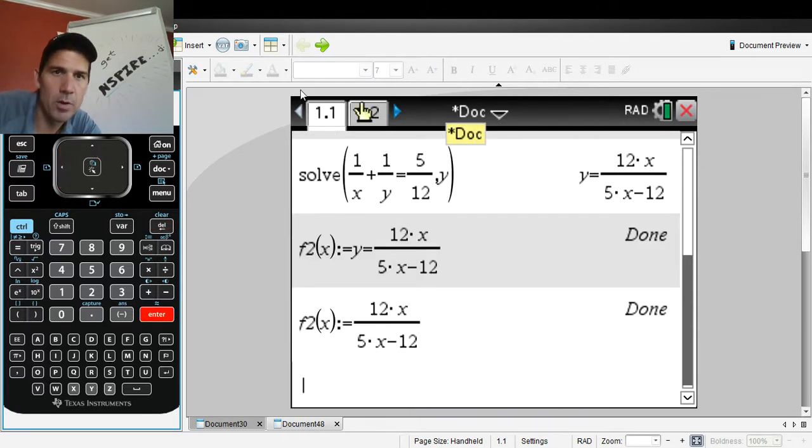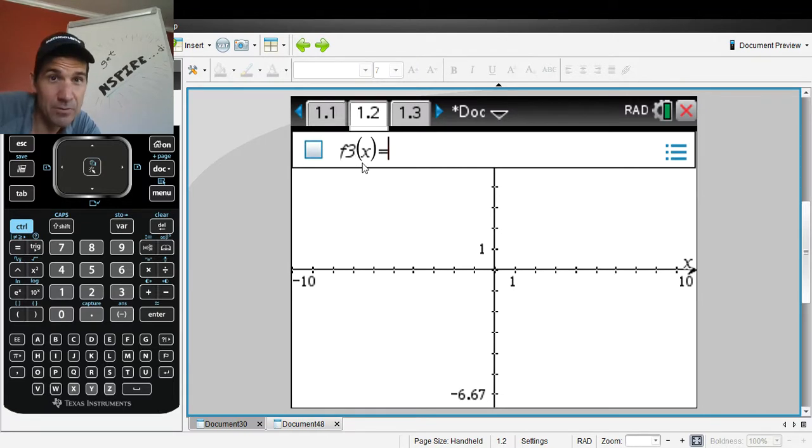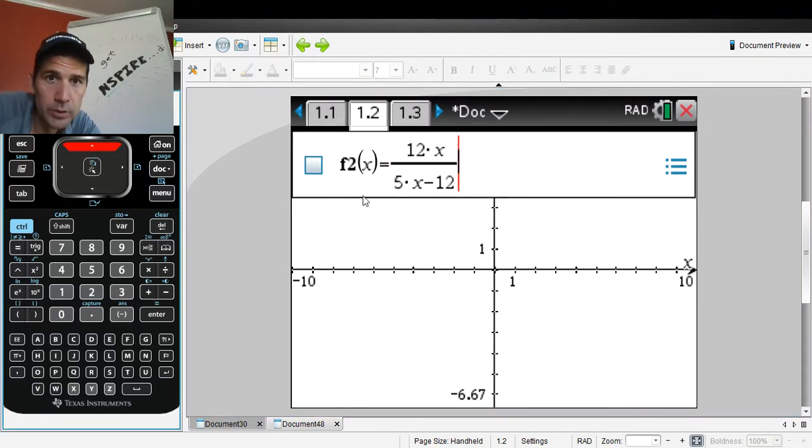Now it's in my F2. I'm going to open a whole different graph just to make it look a little cleaner. Open a new graph. This is F3. I want F2. So you go up to F2. There it is. Hit enter.